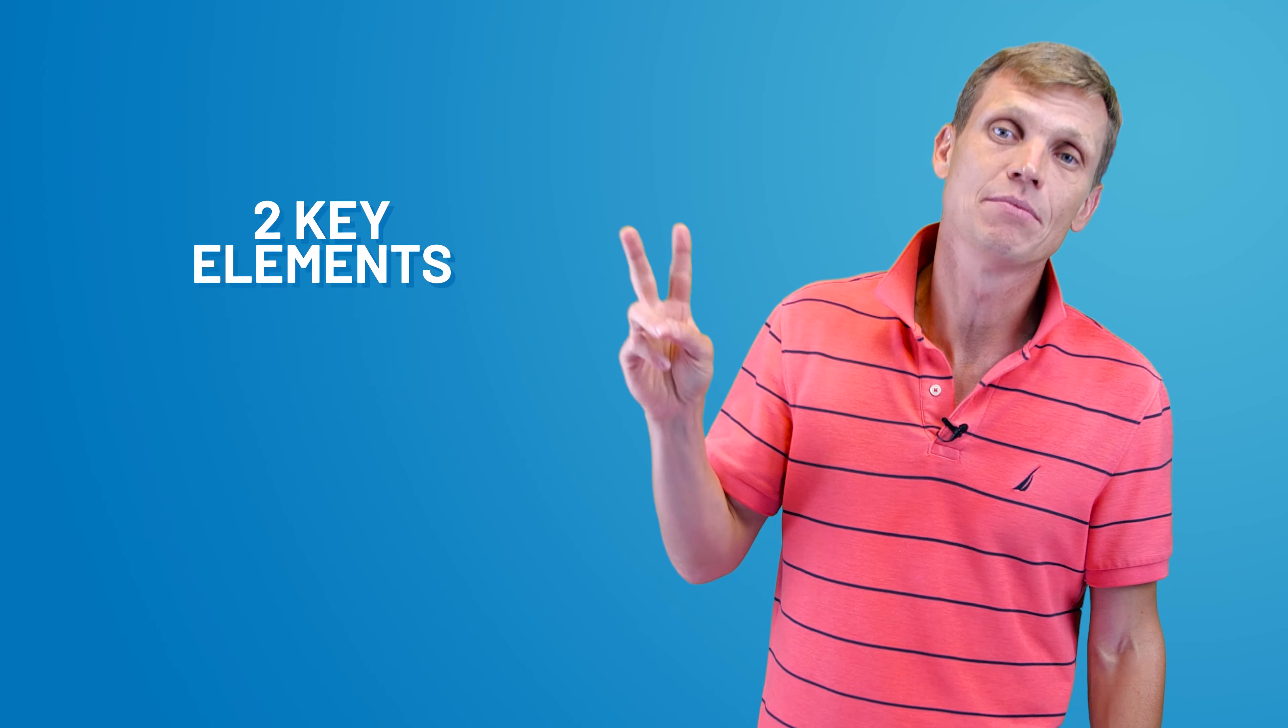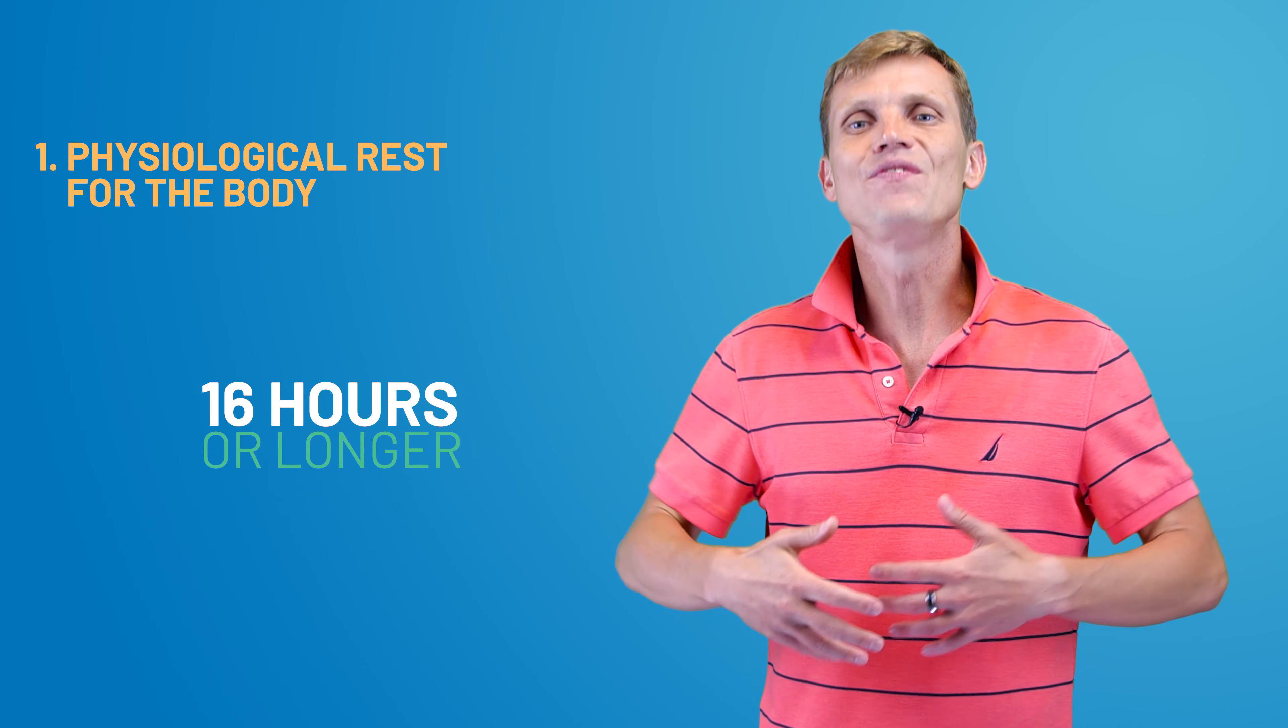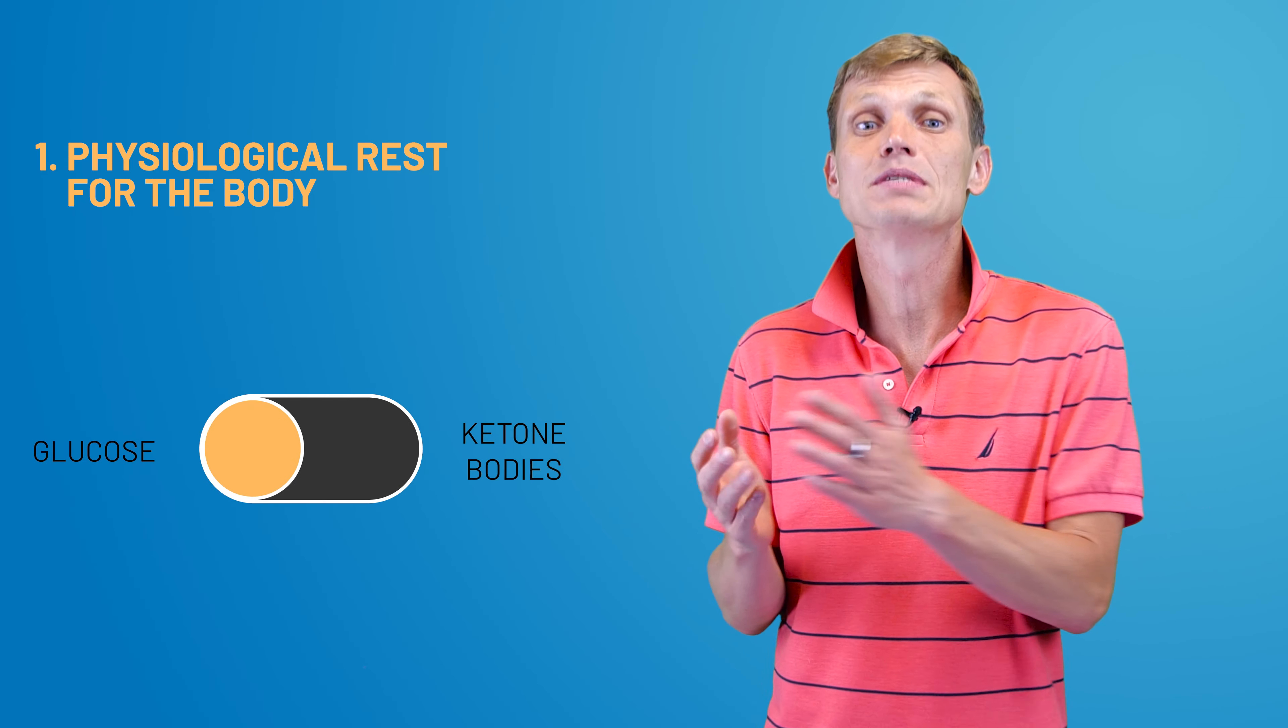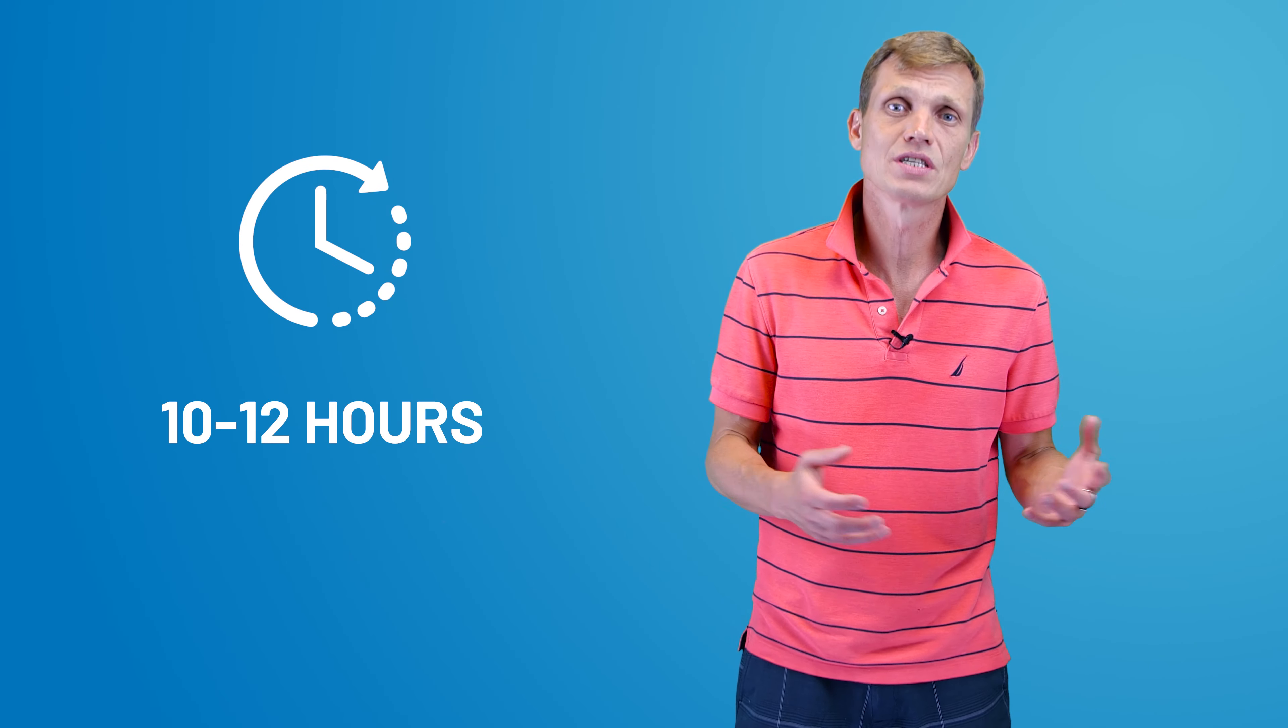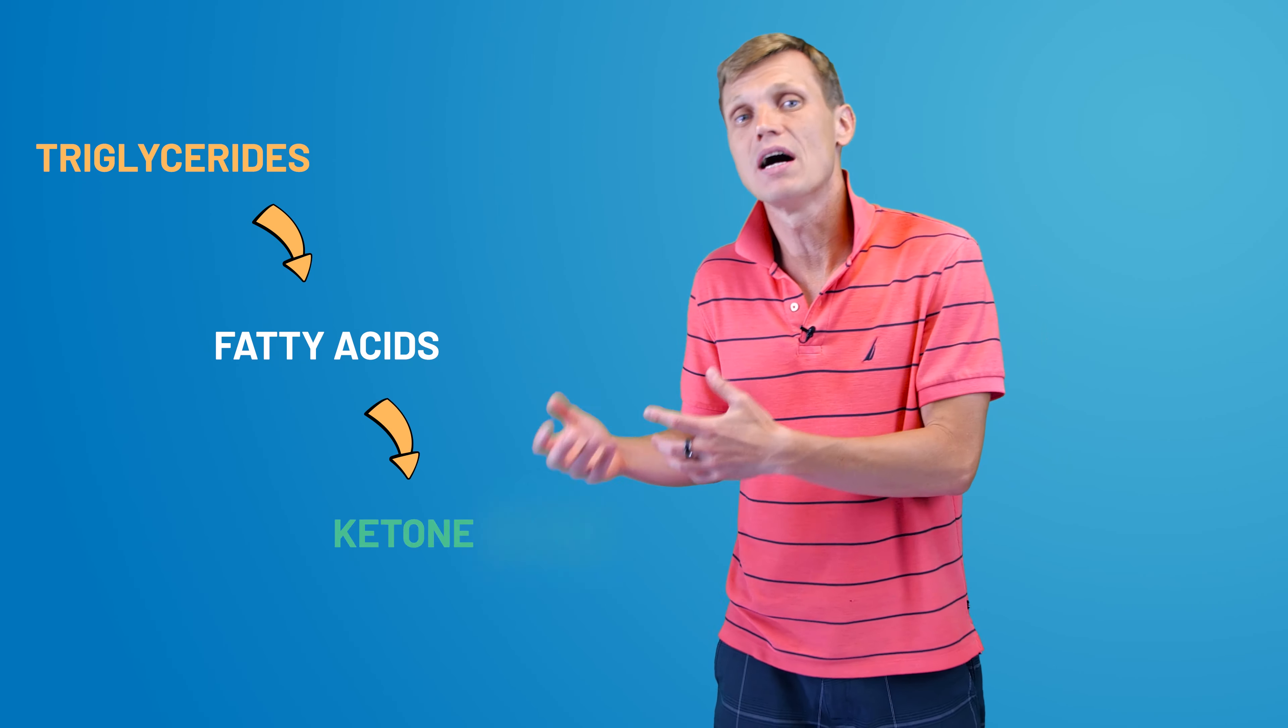If we look at the big picture, we would find that all the benefits of intermittent fasting come from two key elements of this eating pattern. Number one is regular, 16 hours or longer, physiological rest for the body. During this period, the body flips a metabolic switch, changing its energy source from glucose to ketone bodies. It usually takes about 10-12 hours for the body to deplete glycogen energy deposits from the liver and shift towards lipolysis, or fat-burning mode, where triglycerides are first converted into fatty acids before becoming ketone bodies.